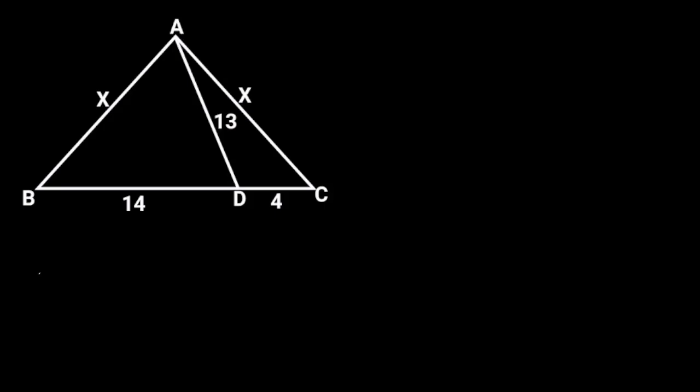To solve this problem, first let's observe that in triangle ABC, AB is equal to BC, which is equal to X. This shows that triangle ABC is an isosceles triangle.